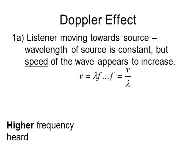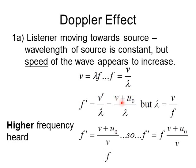As the observer moves, the wavelength stays the same but the apparent speed of the wave changes. This is important to be able to explain as well as calculate. The new observed frequency F-prime differs because there is a new observed velocity — the wave appears to travel faster — while the wavelength remains the same.